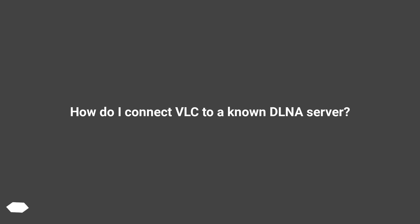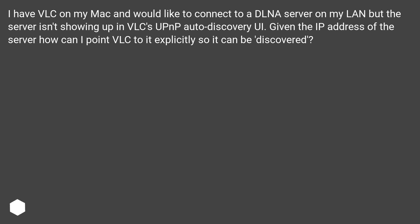How do I connect VLC to a known DLNA server? I have VLC on my Mac and would like to connect to a DLNA server on my LAN, but the server isn't showing up in VLC's UPnP auto-discovery UI. Given the IP address of the server, how can I point VLC to it explicitly so it can be discovered?